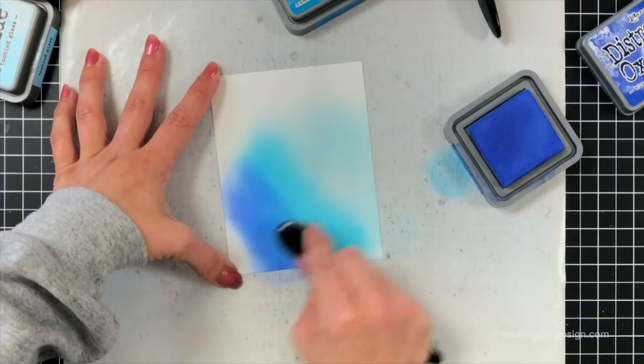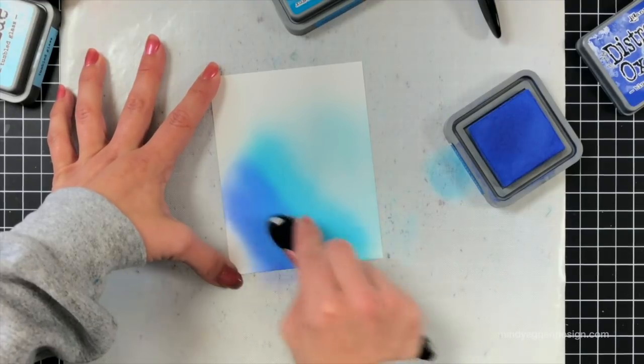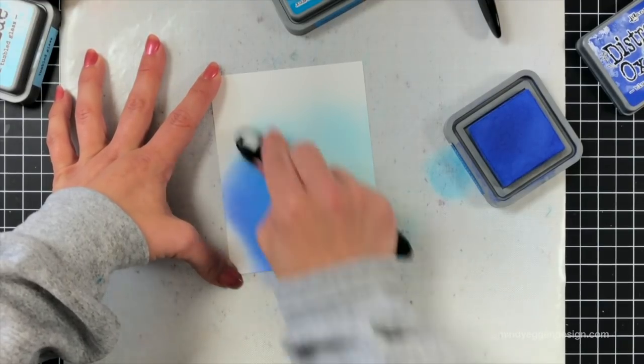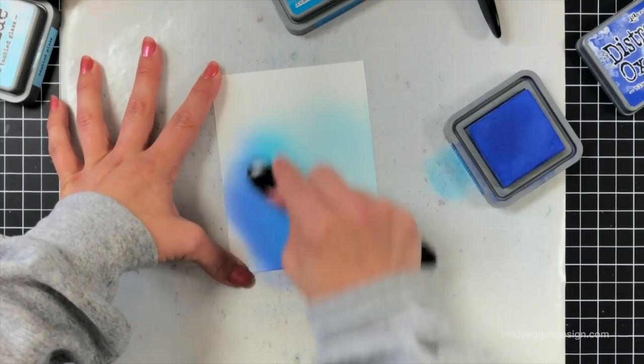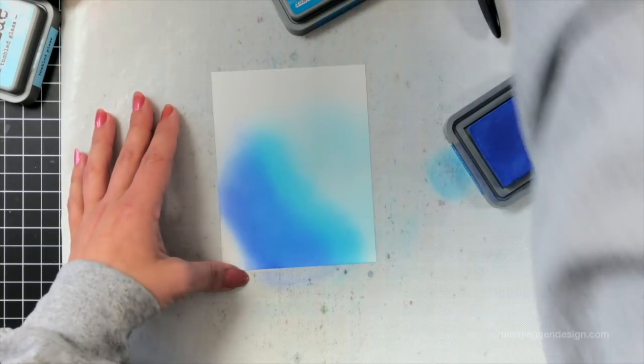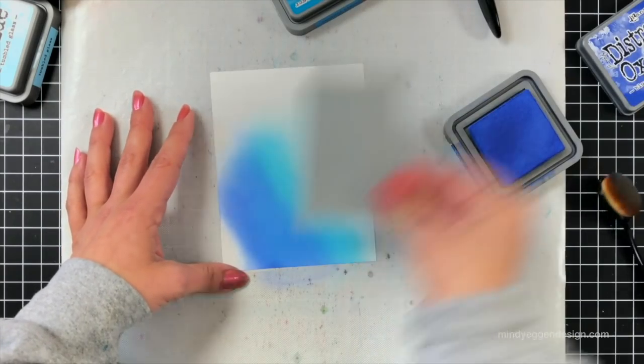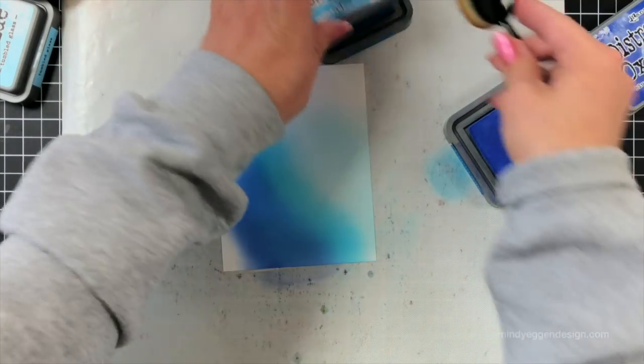Next I'm coming in with the Blueprint Sketch and just adding that a little bit into that corner. I don't want to cover up my Mermaid Lagoon. And then I'll come back in a little bit with that Mermaid Lagoon to kind of even out that blend.